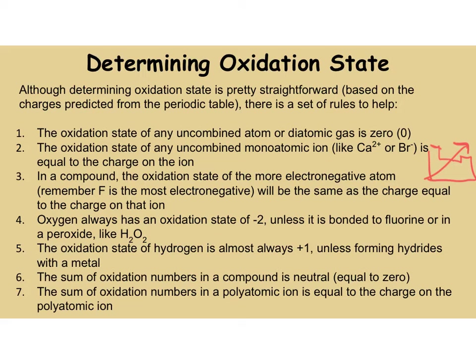Hydrogen is always plus 1 unless it's forming a hydride with a metal. All compounds are neutral, and the sum of the oxidation numbers in a polyatomic ion are equal to the charge on that ion.